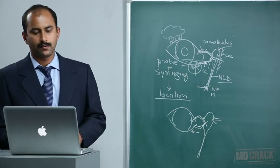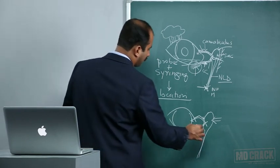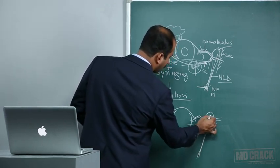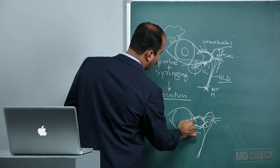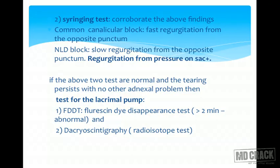In NLD obstruction, fluid passes with eddy currents into the sac and flows out through the opposite canaliculus as slow regurgitation from the opposite punctum. Probe test combined with syringing locates the point of obstruction. If both tests are normal but tearing persists, we need to evaluate the functional cause — the function of the lacrimal pump.